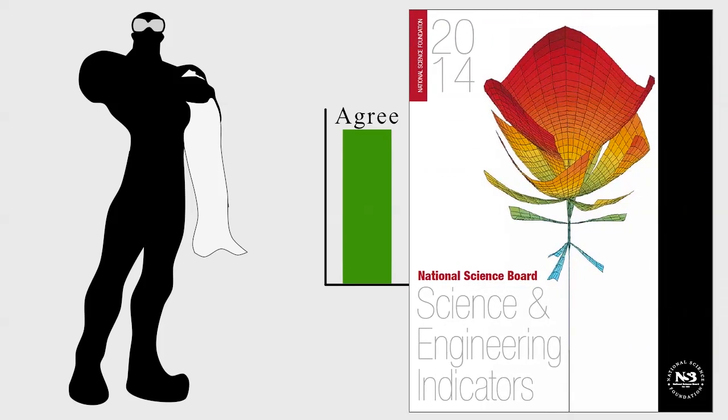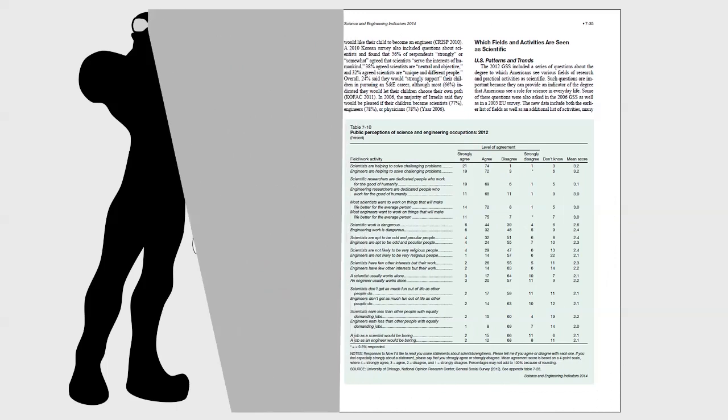This is actually a pretty close approximation of the view most people have of scientists, according to the 2014 National Science Foundation report on the public perception of science and engineering. So then how can it be that on scientific issues these same people don't trust scientists?